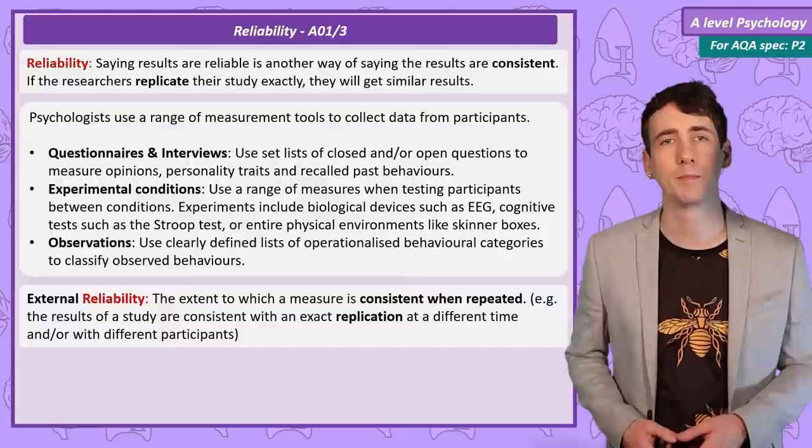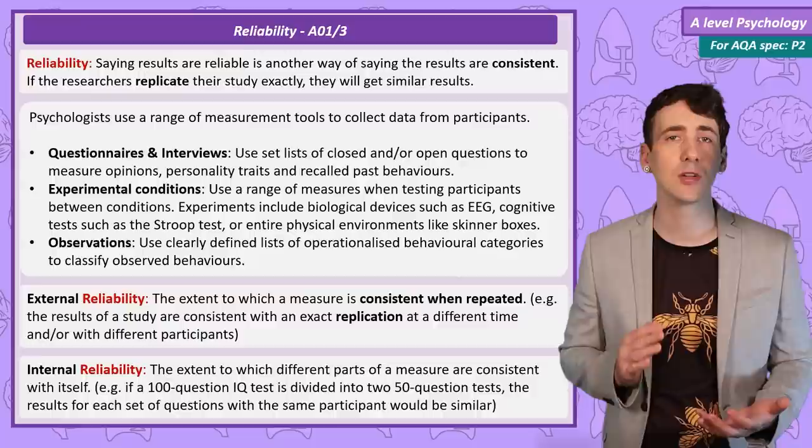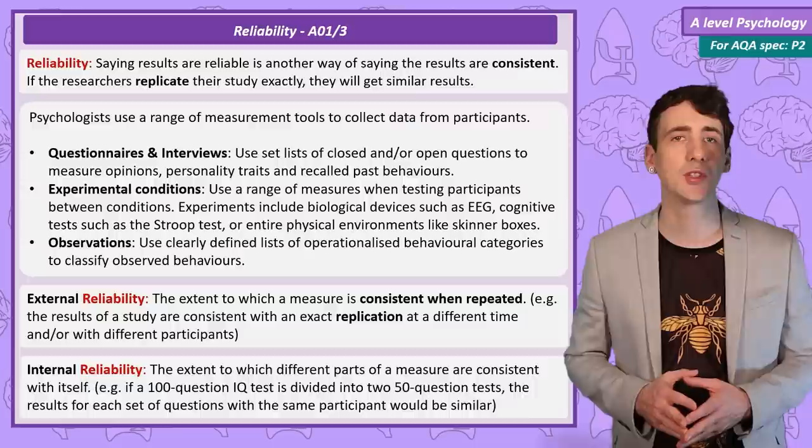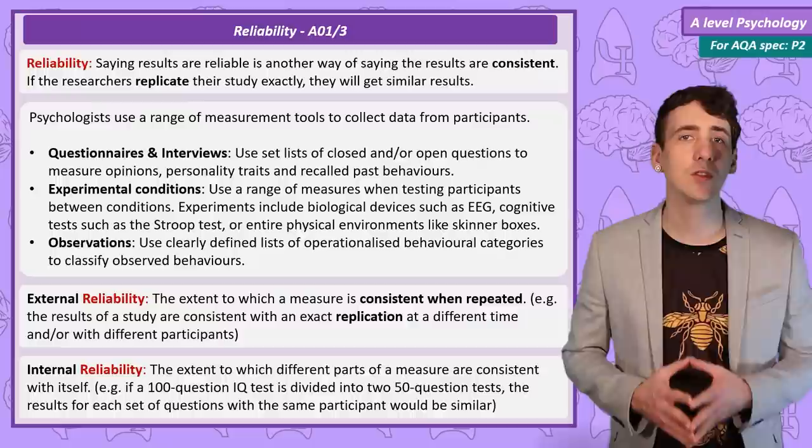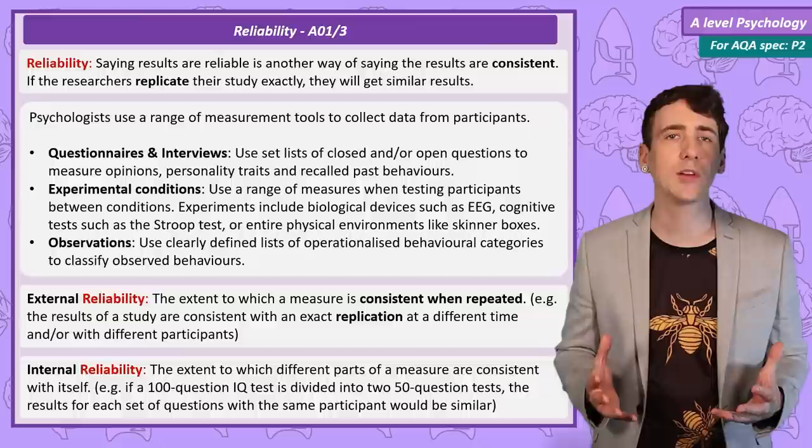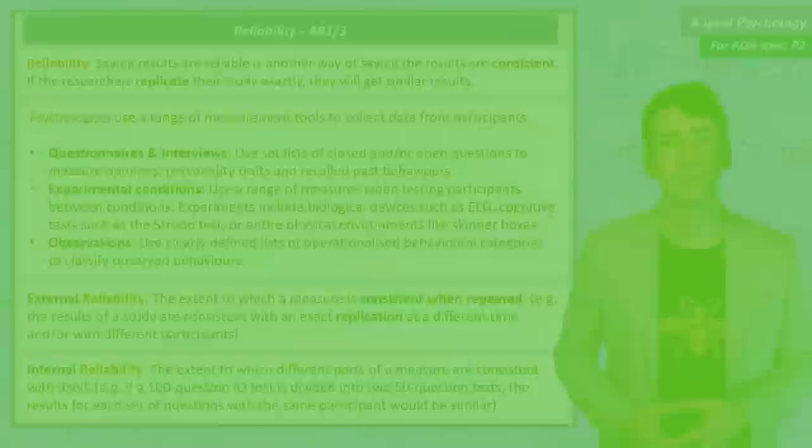But we also need to consider internal reliability, which is how consistent the different parts of the measure we use is with the other parts of that measure. Say for example we had a 100 question questionnaire that assessed intelligence, personality or attitudes. All of these questions should be reliable, so consistently measure the variable. So if we split the questionnaire into two 50-question questionnaires, we should get similar results with each of the 50-question questionnaires.